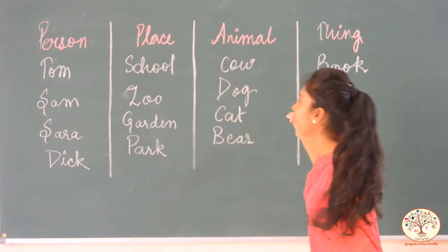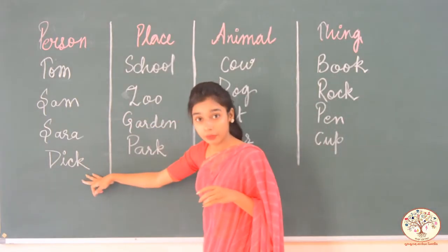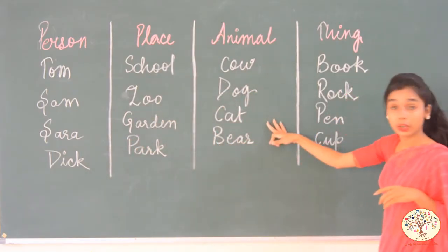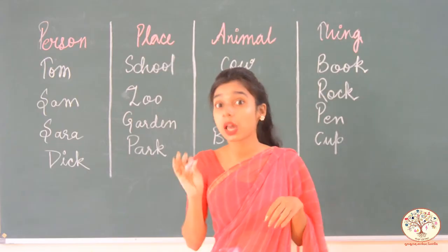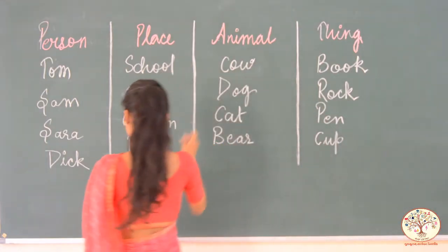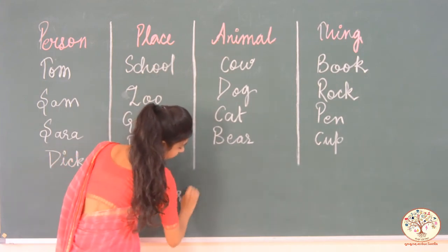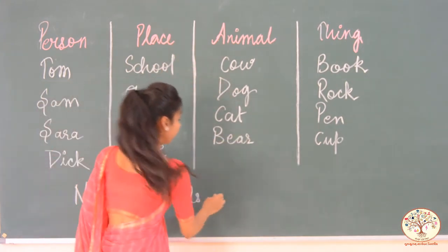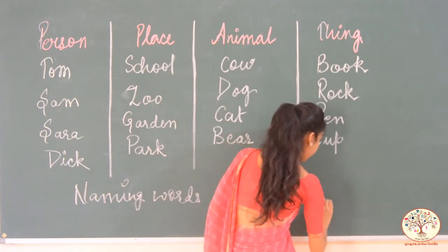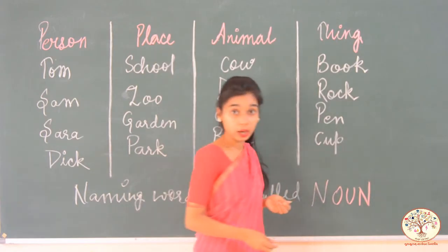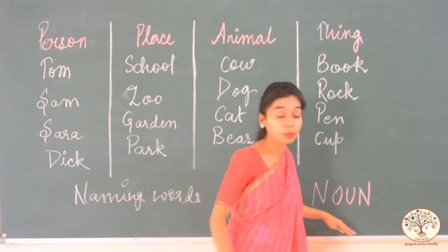So what we have? A number of names under four heads. Four different names of a person, four different names of a place, four different names of an animal, and four different names of things. Each and every thing around us has its particular name. All these are naming words, and all these naming words are specifically called noun. This is called noun — all these naming words are called nouns.